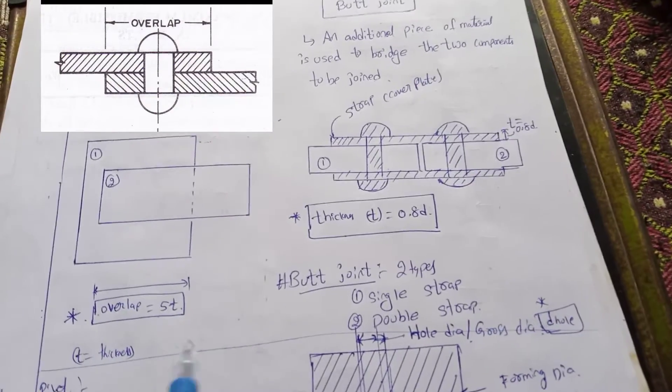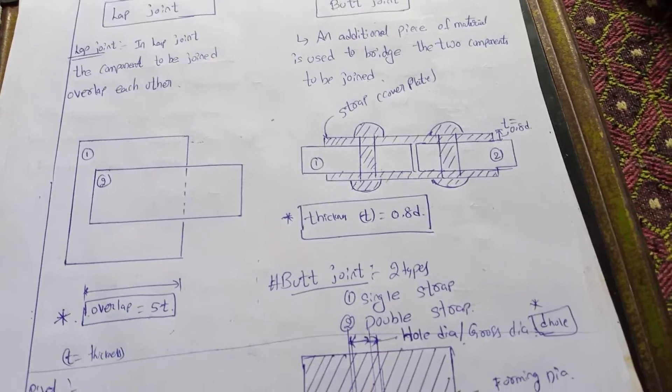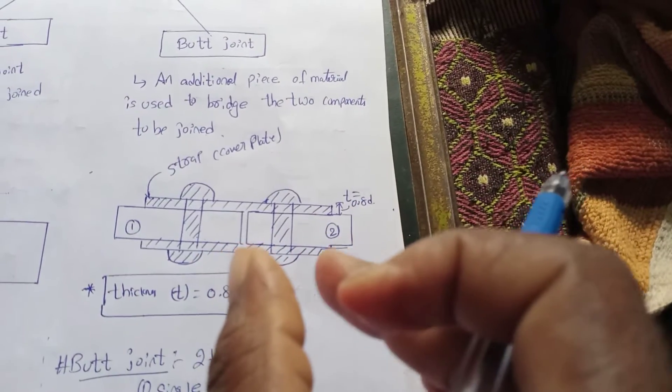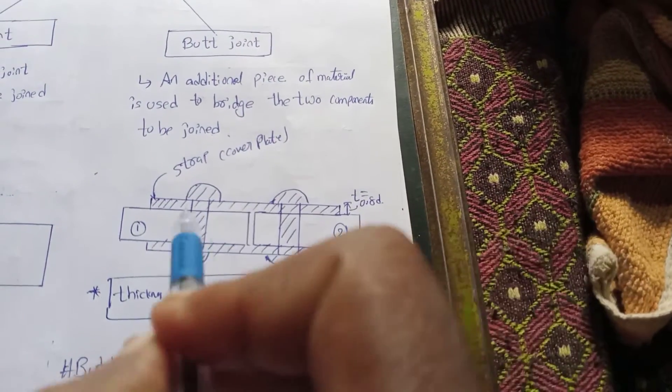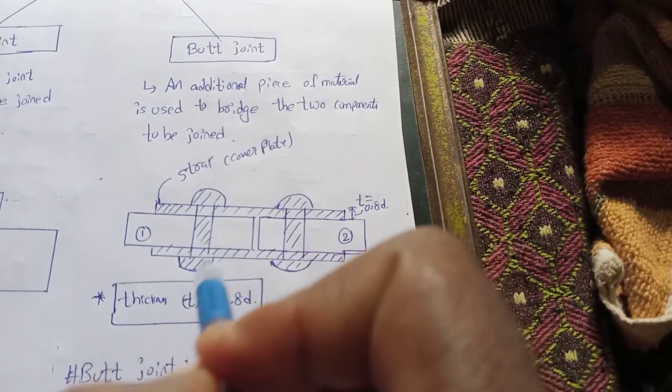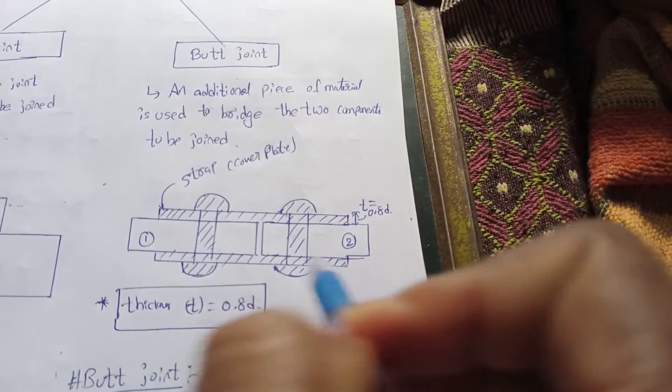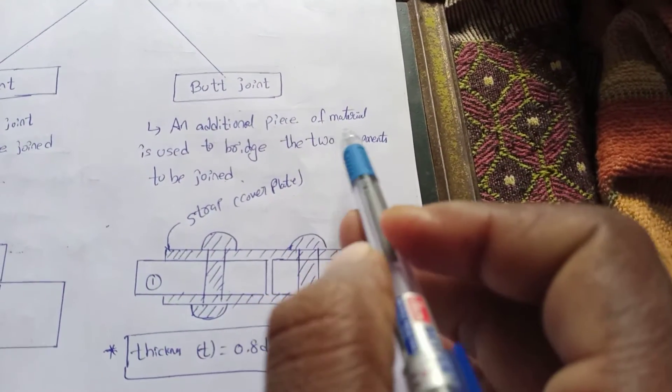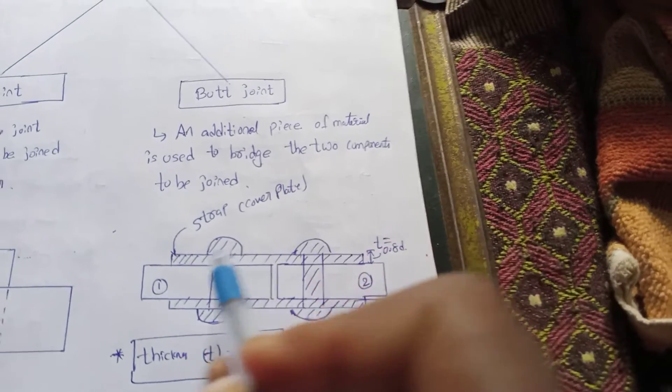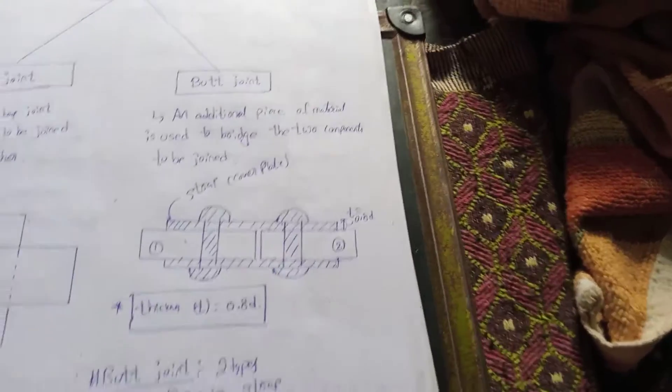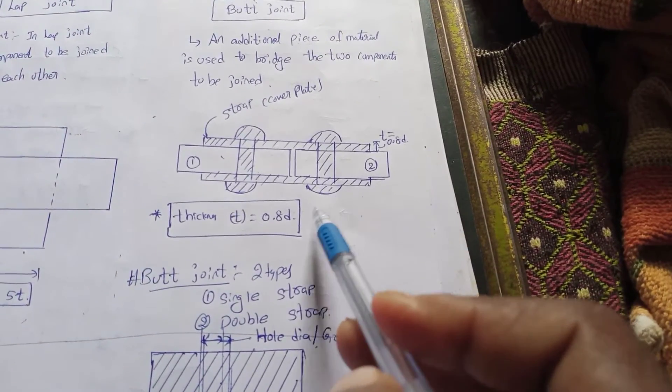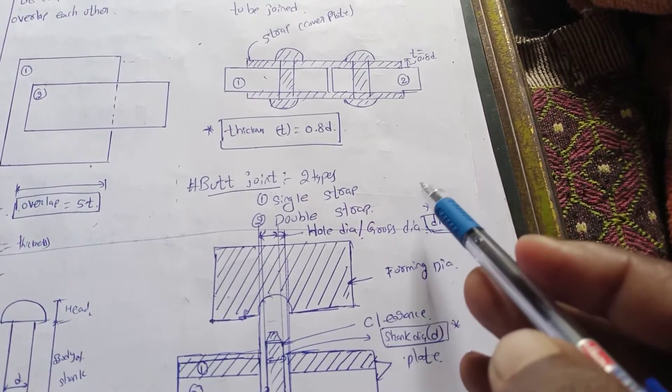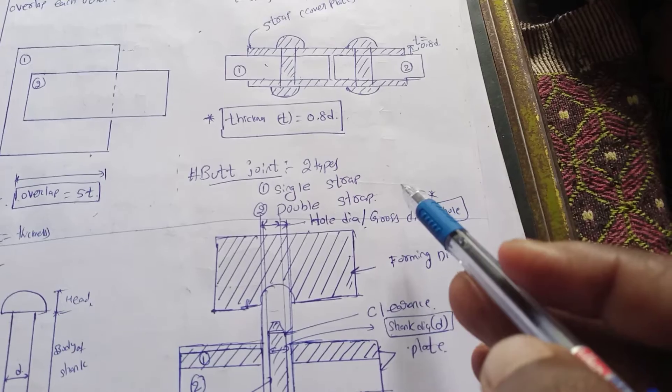In case of butt joint, this is the edge in contact - plate and plate are riveted. This is an additional piece of material used to bridge the two components. This is one component with thickness of 0.8D. The butt joint has two types: single strap and double strap.